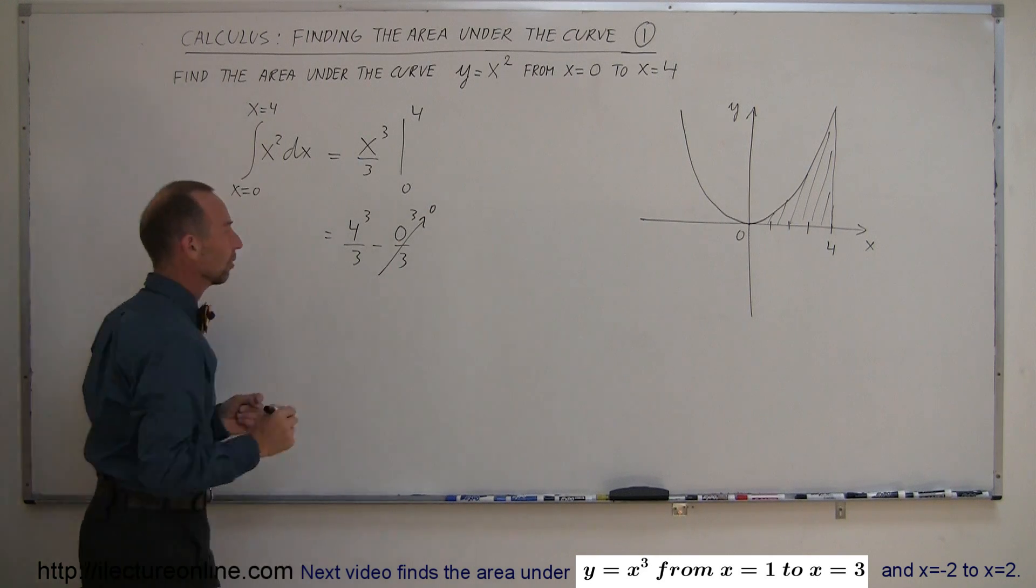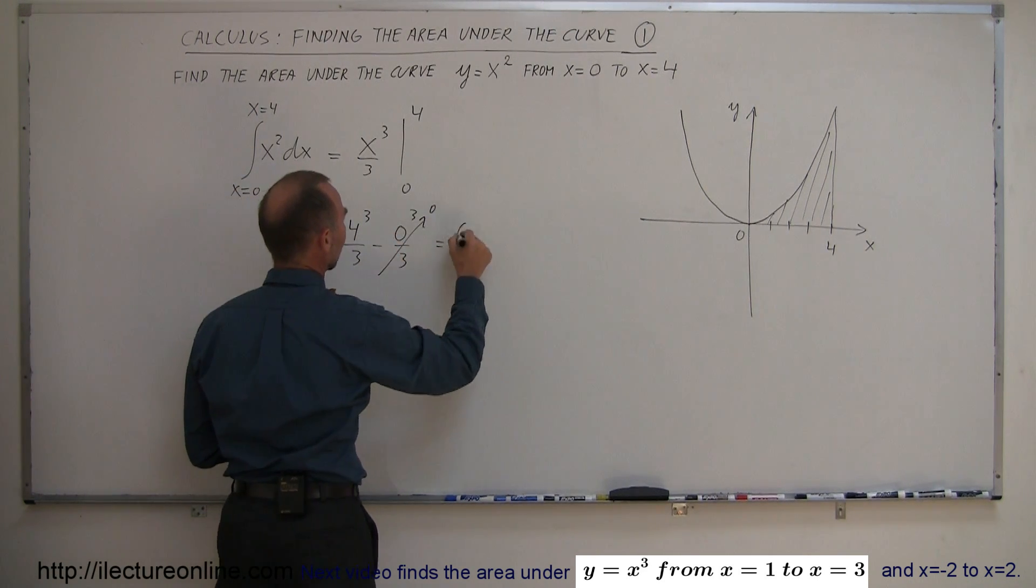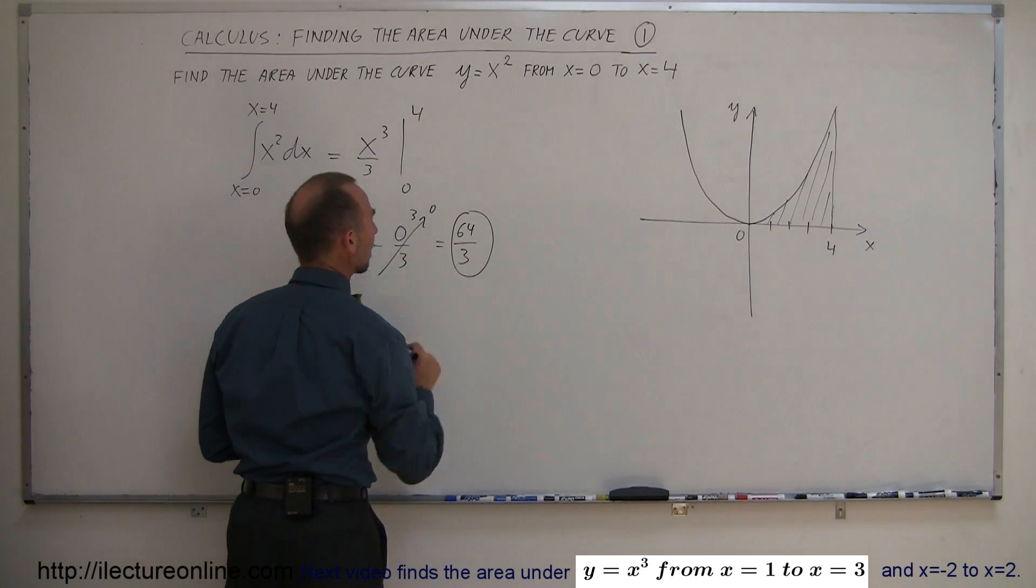And of course, this portion goes to 0 and so the area under the curve then becomes 4³, which is 64, divided by 3, and that's the area.